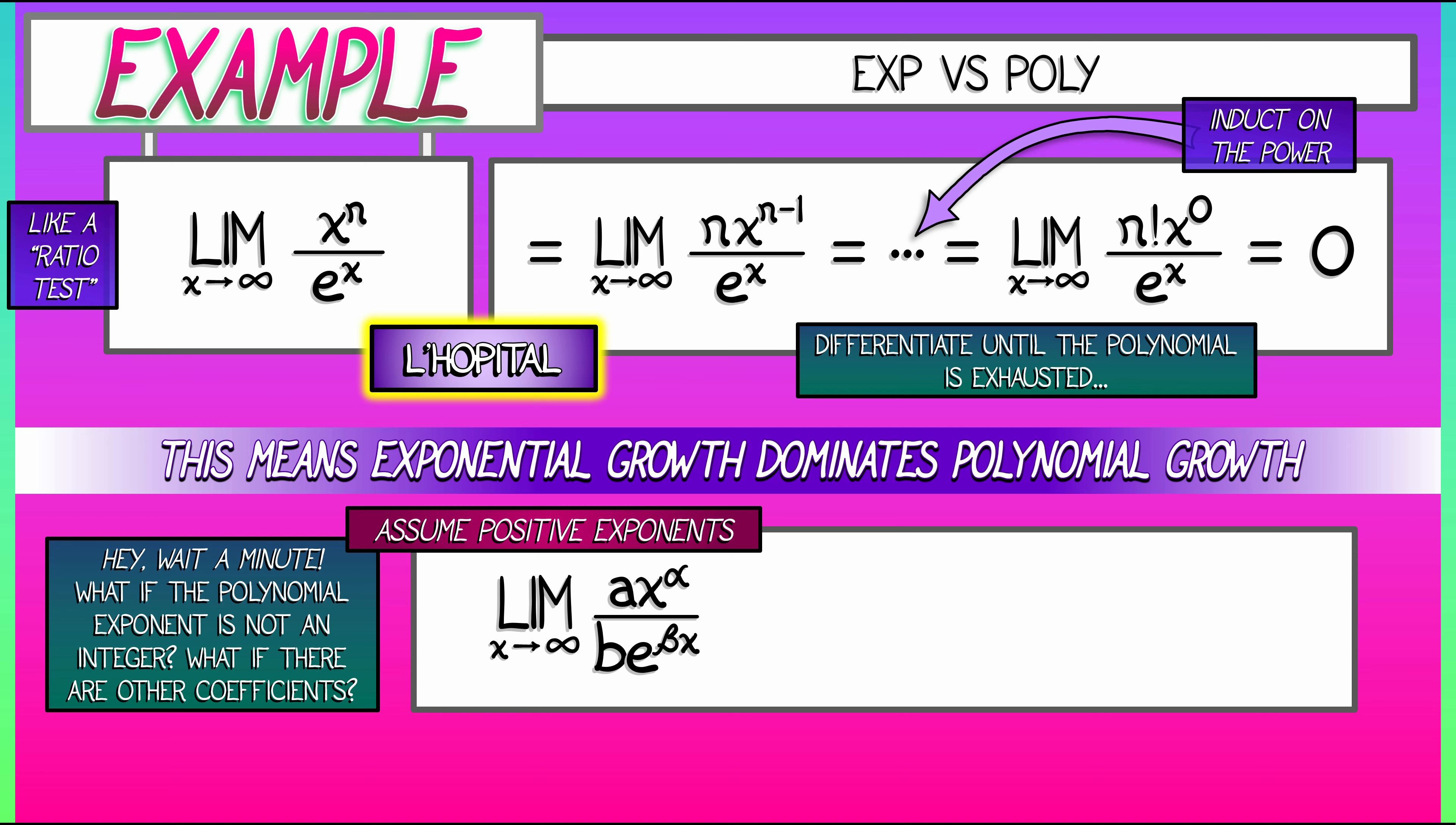Well, those constants, a, b, out in front, those are just constants. I could pull them out of the limit. Let's just toss it into a generic constant, capital C. And then, we have the limit as x goes to infinity. I'm going to use L'Hopital, take the derivative of the numerator. That's going to give me alpha times x to the alpha minus one. But that alpha, it's a constant. I'm going to pull it out, toss it in with that C. What do I get down below? The derivative of e to the beta x is beta times e to the beta x. Pull that constant beta out front. What do we notice?